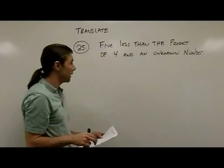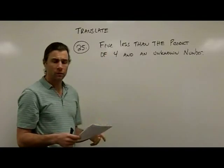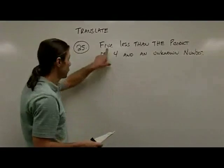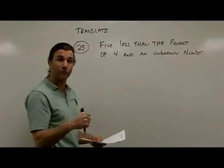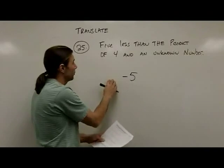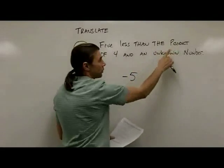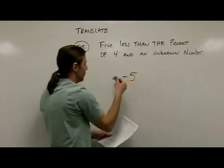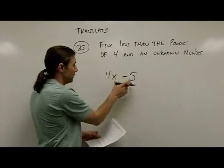The question I'm doing here is number 25. We're asked to find 5 less than the product of 4 and an unknown number. That's a lot to take at once, so we break it down. '5 less than something' means subtracting 5 from that something, so we put minus 5. The product of 4 and an unknown number is just 4x. So the full algebraic expression is 4x minus 5.